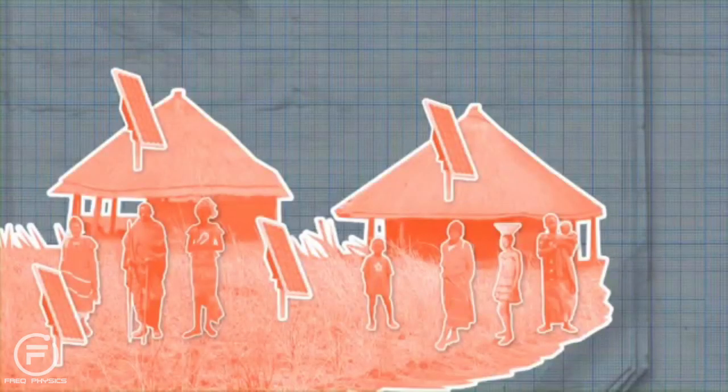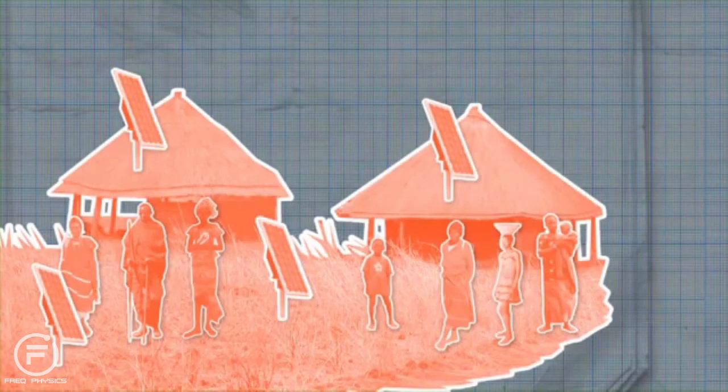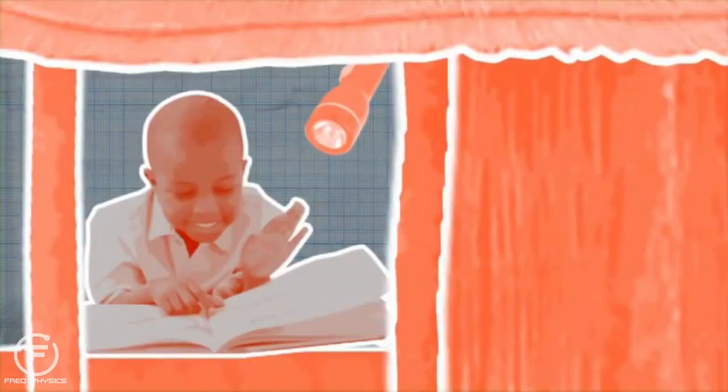For example, if you can give the village enough power to charge up torch batteries so that they have light in the evening, this can extend people's working hours. Being able to be more productive in the evening can have an absolutely massive impact in fields like education. It can really make a big difference in people's lives.